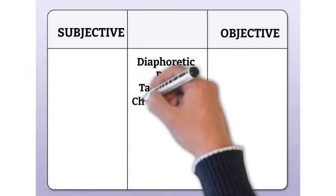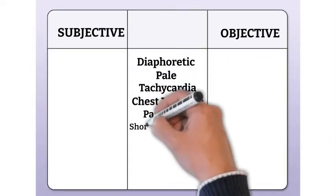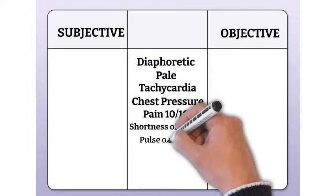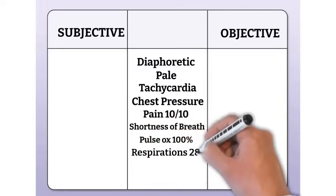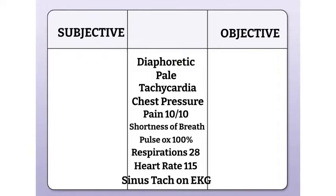Let's list all of the data that we've collected and then decide whether it's subjective or objective. This patient is diaphoretic, pale, has tachycardia, chest pressure, pain 10 out of 10, shortness of breath. Pulse ox is 100%, respirations are 28, heart rate is 115, and the patient is showing sinus tachycardia on an EKG.